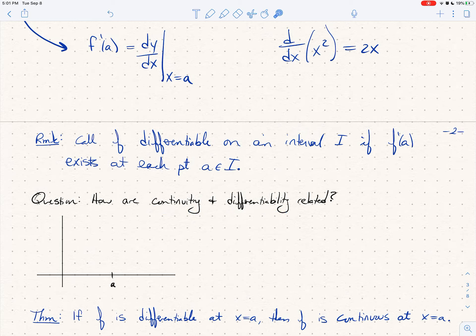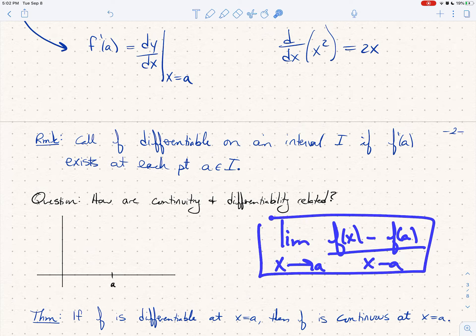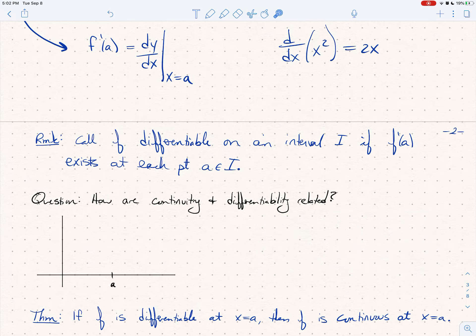So let's think about it. The limit as x goes to a of f of x equals f of a, that's what it means to be continuous at a point, and the limit as x goes to a of f of x minus f of a over x minus a, this is the definition of the derivative. This limit needs to exist.